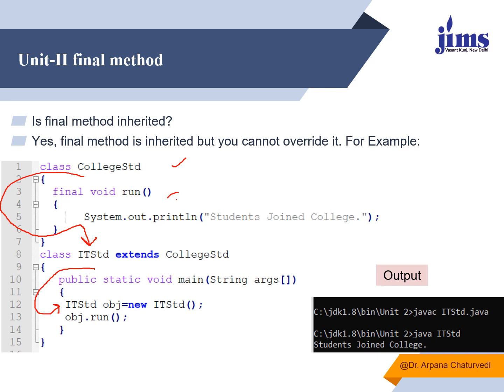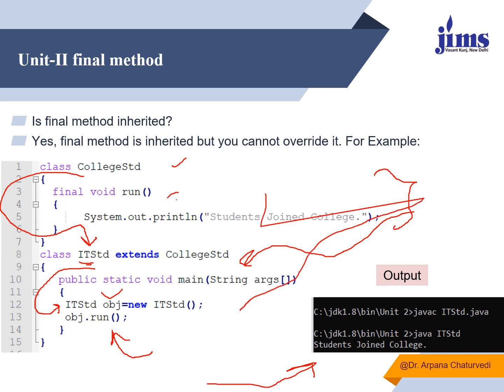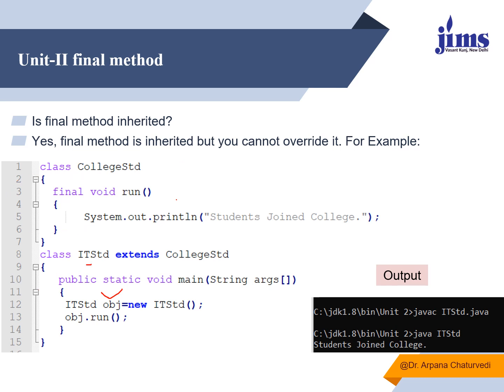Run is a member function of the CollegeStd class and I have extended IITSt from this class. As per the rule of inheritance, whatever data members and member functions are in the parent class are also part of the derived class. So using the object of the derived class, I am calling the member function of the parent class — and it is possible. This means you can inherit a final method into the derived class, but you cannot override it.